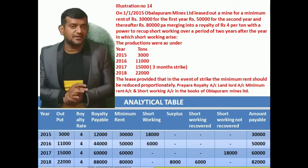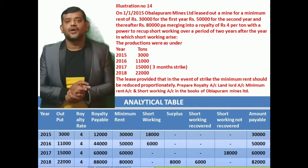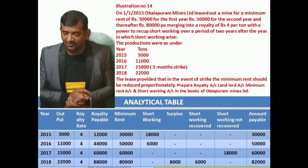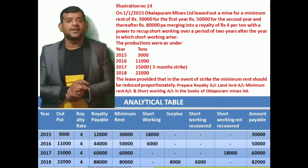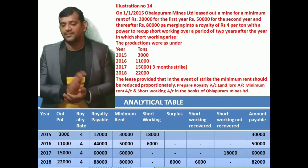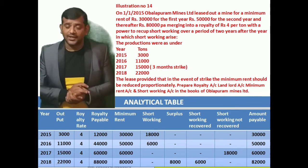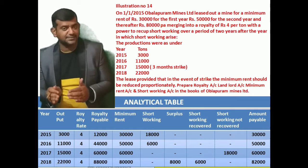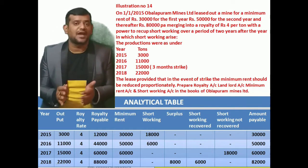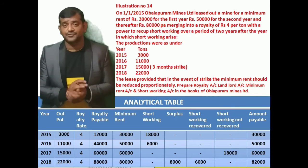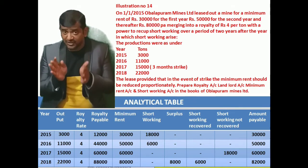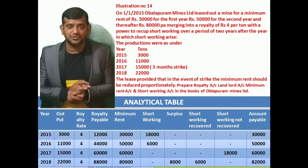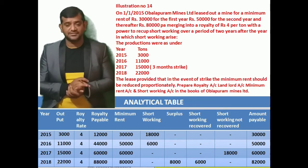Third year onwards minimum rent is 80,000, which is for 12 months. So 80,000 divided by 12 months into how many months were productive — remove 3 months for the strike, leaving only 9 productive months. So 80,000 divided by 12 into 9 months gives a reduced value — that proportionate reduction in the minimum rent will be Rs. 60,000 for the year 2017.